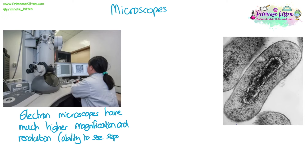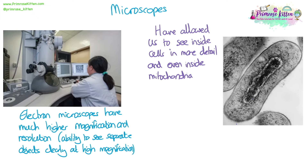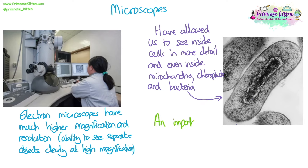Electron microscopes are newer technology with much higher magnification and resolution ability than light microscopes. This means we can see more structures that are smaller — we can see inside cells in far more detail, inside sub-cellular structures like mitochondria and chloroplasts, and even inside the smallest organisms like bacteria. It has been an important development in understanding life on earth.